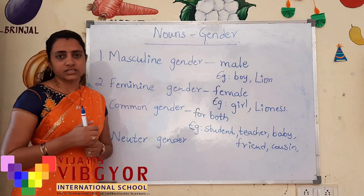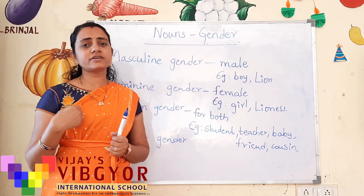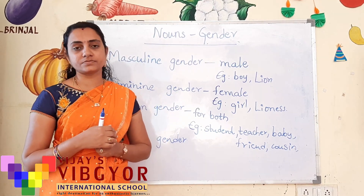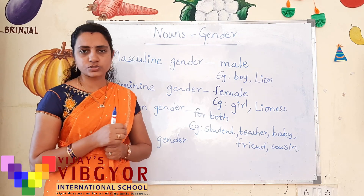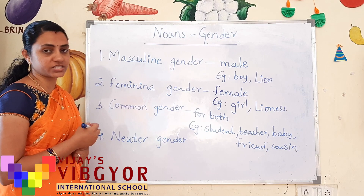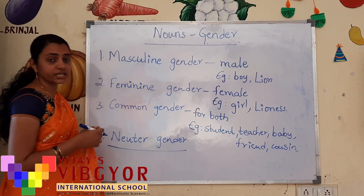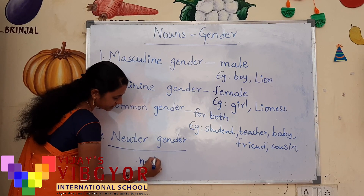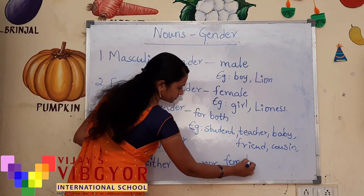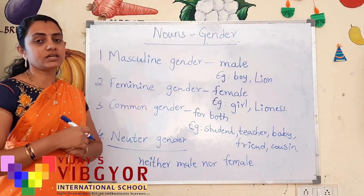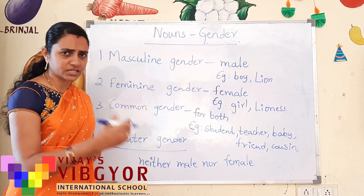Next, neuter gender. There are some nouns which cannot be considered to be male, and they cannot be considered to be female. Those are not words which can be used in common for both male and female either. We call them neuter gender — they are neither male nor female. Most non-living things fall in this category.